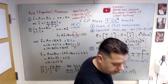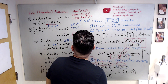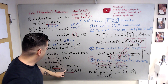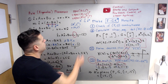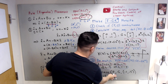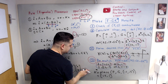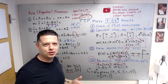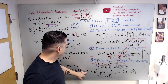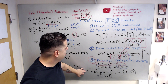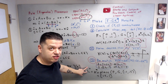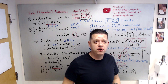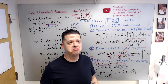One final tip: you can directly use pole placement for A - BK as shown. When using it for A - LC, convert to the transpose form: F = A^T, G = C^T, K* = L^T. After running pole placement, the result you get is L^T, so take the transpose to recover the actual observer gain L. Keep this in mind when solving the estimation problem. I hope you find this video helpful — feel free to comment with any topics you'd like covered.